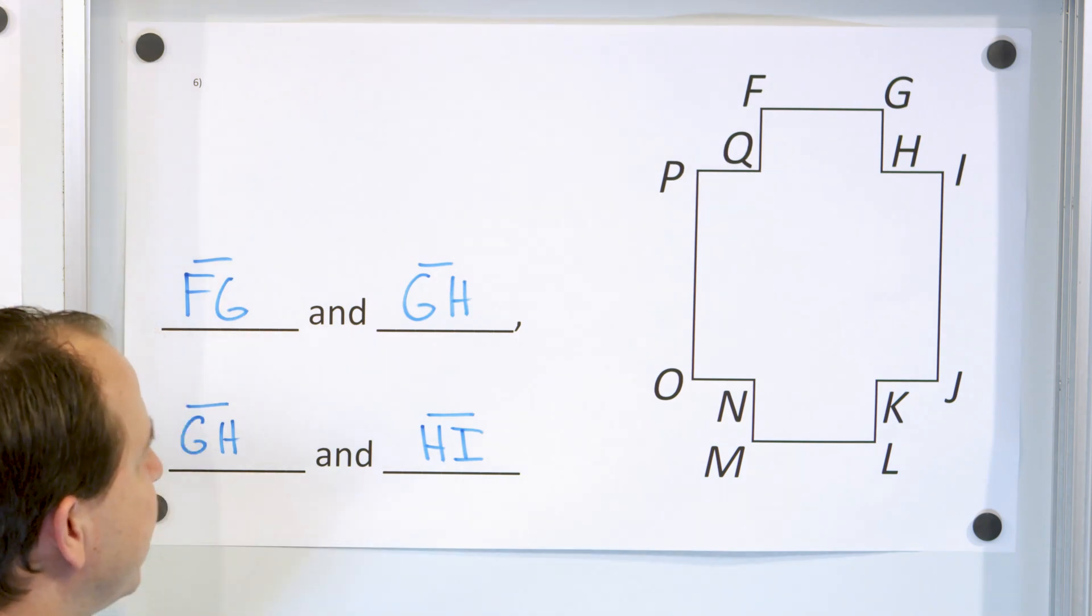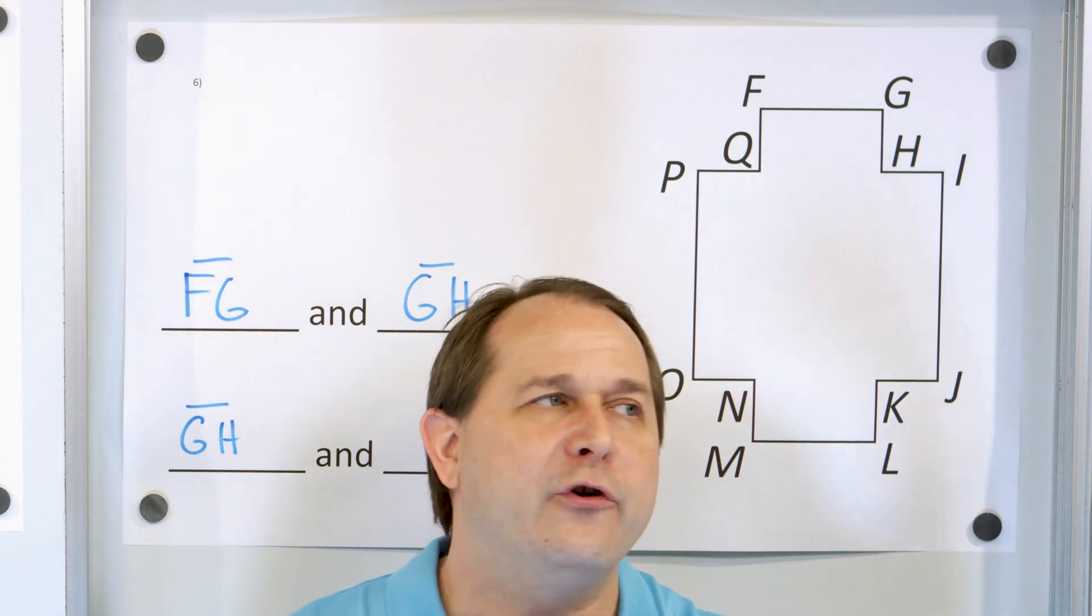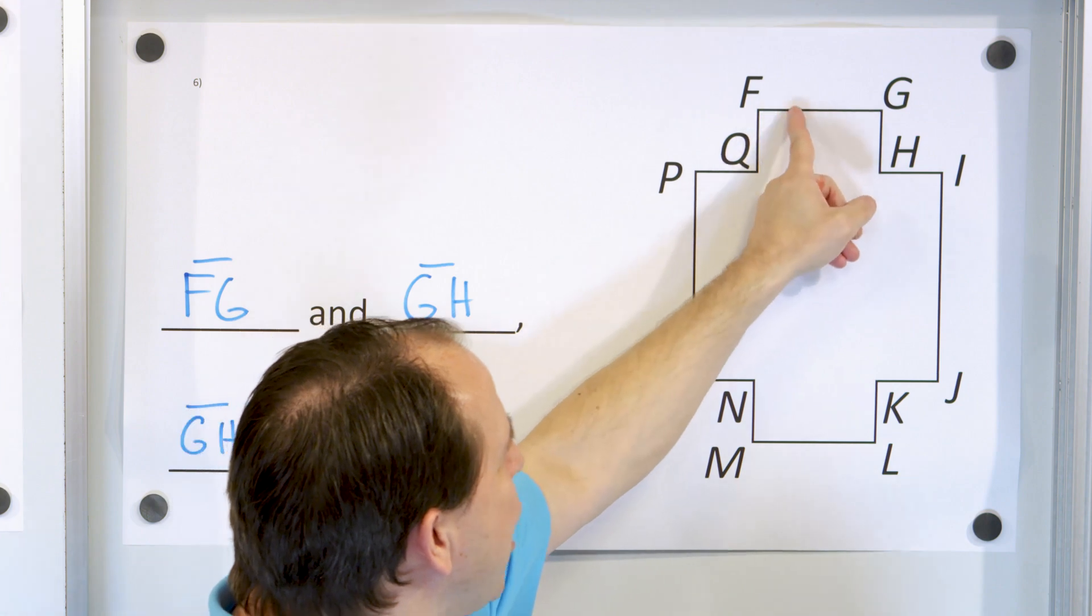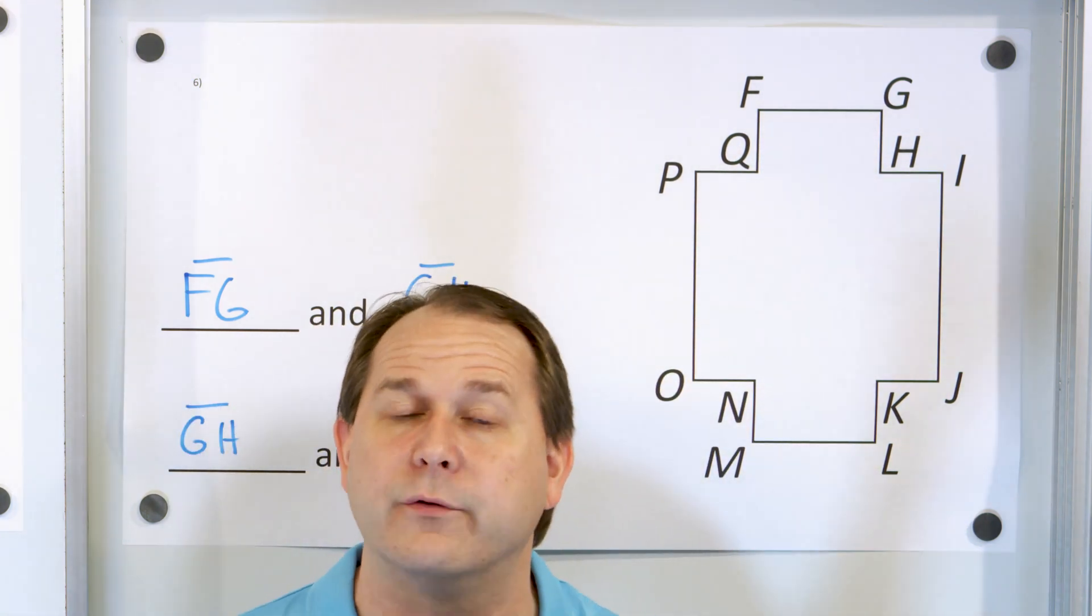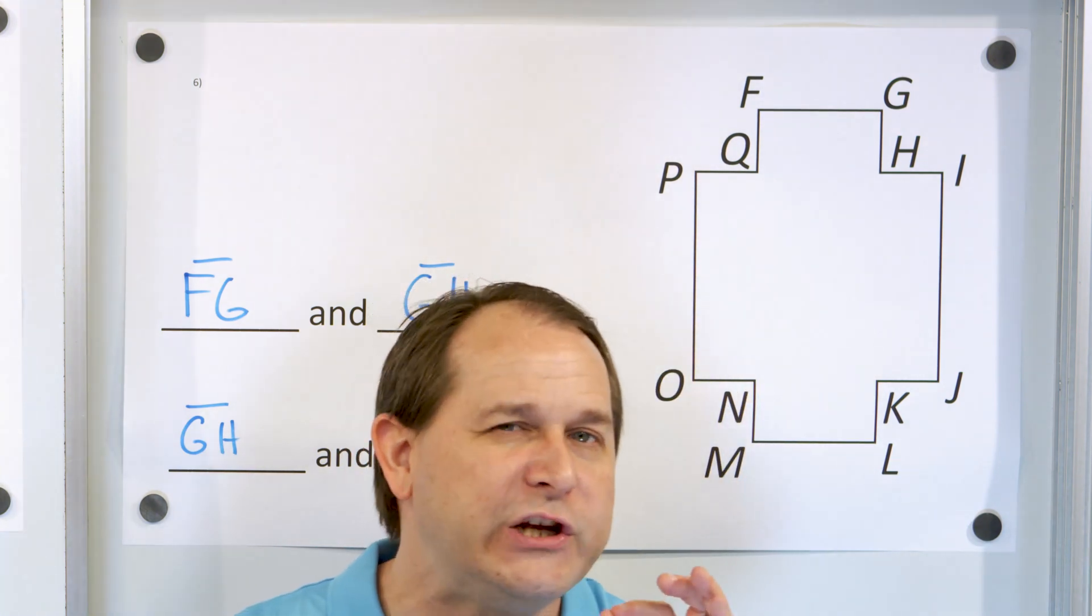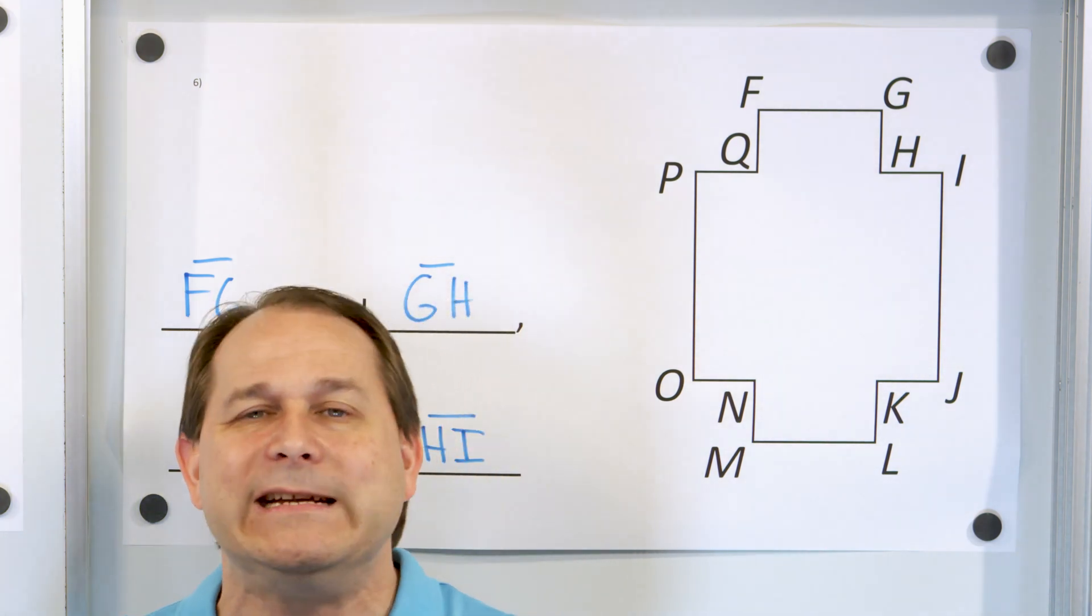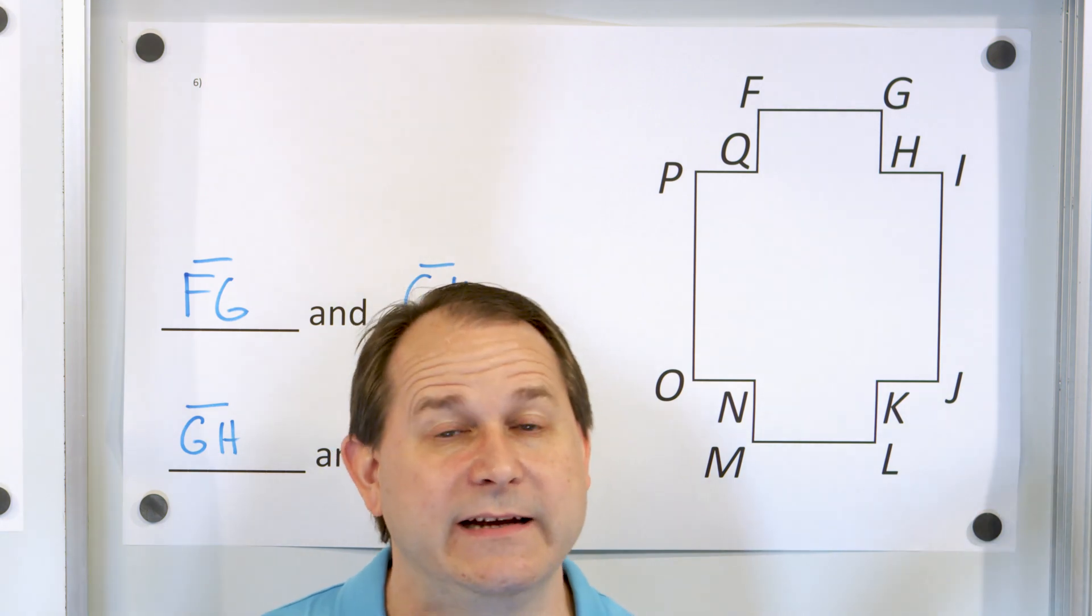And notice though, in this figure, we don't have any of those little squares that tell us it's a right angle. So we don't actually know if this is 90 degrees to this. We don't really know if these angles are right angles because the corners are not labeled with that little square. So we don't really know, but it does appear that they're 90 degrees, but maybe they're really close. Maybe they're 89.9. That's not a right angle if it's not exactly 90 degrees.